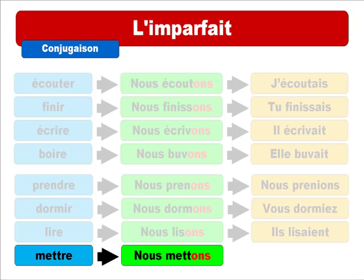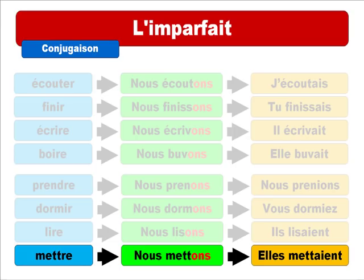For the pronunciation of mettait, remember that when you have two T's right after the E, it gives you an open E sound: 'È' — that's why we say 'elle mettait.' So the final form is 'elle mettait.' I hope it was clear for you. Don't be afraid to watch it again and again. Have a nice day, bye bye!